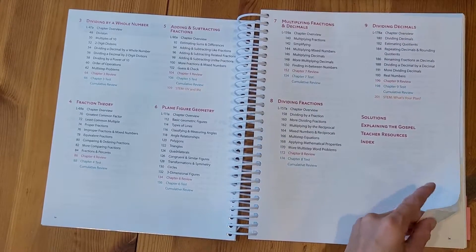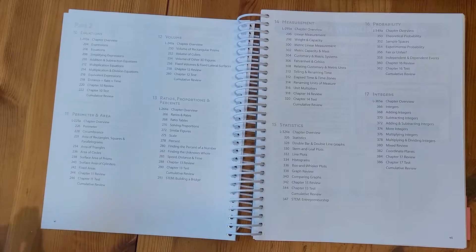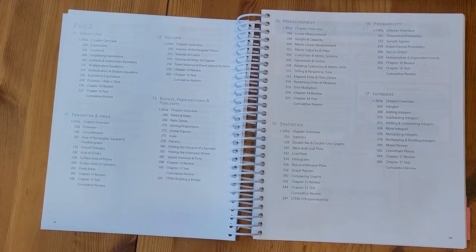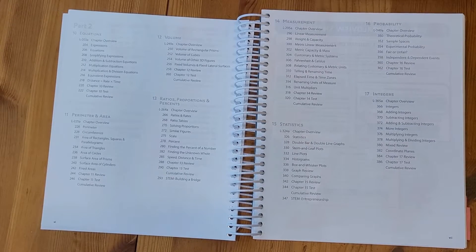You are also going to see on this next page that the headers in this portion of the table of contents are grayed out. That means those chapters are in part two of the teacher edition book.